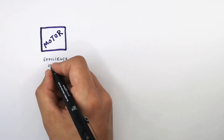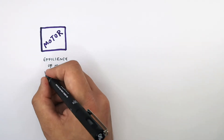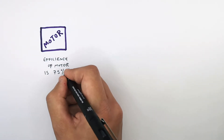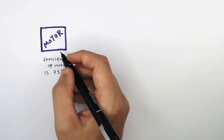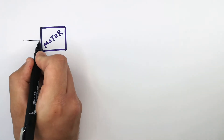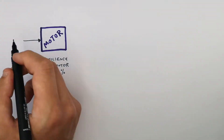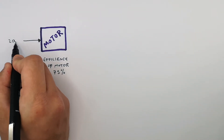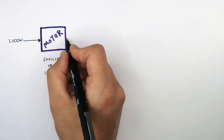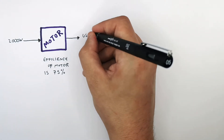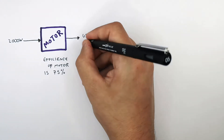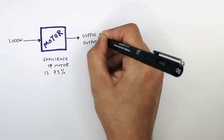The efficiency of this motor is 75%. The total power input to this motor is 2000 watts, and the useful power output is what we're trying to calculate.